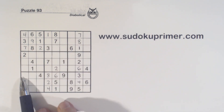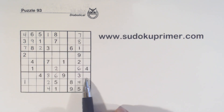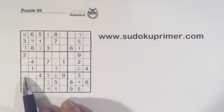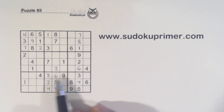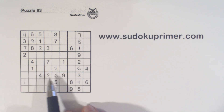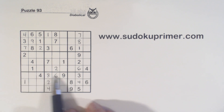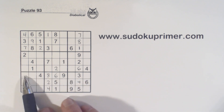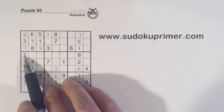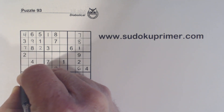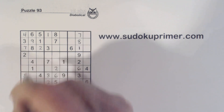Now let's look at row seven and see what we're missing: one, two, five, seven. There's a one, two, and a seven there, so that's a five.